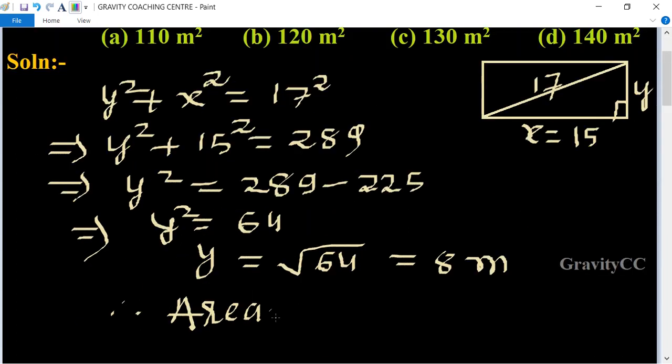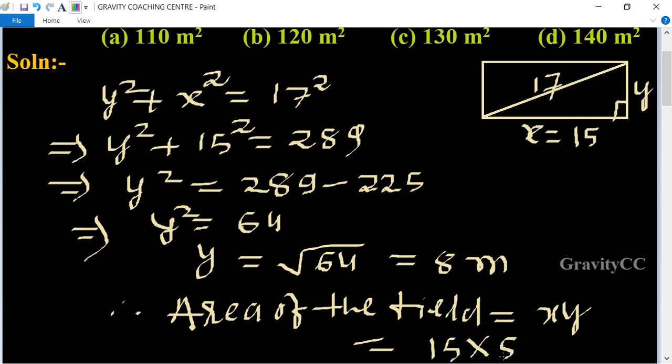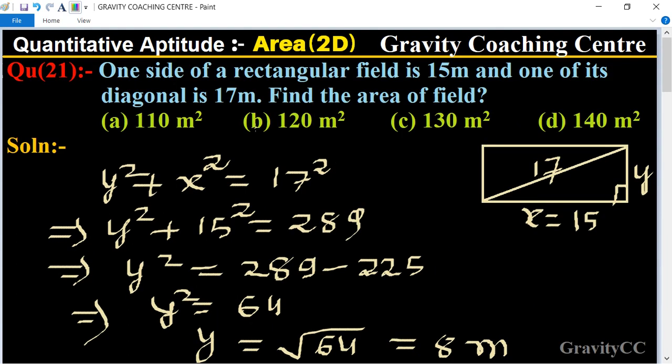Therefore, area of the field = length × breadth = x × y. The value of x is 15 multiplied by 8, which equals 120 m². This is the required answer, so option b is the correct answer.